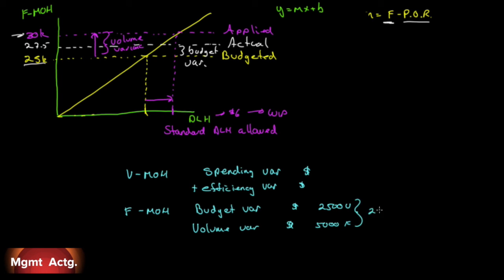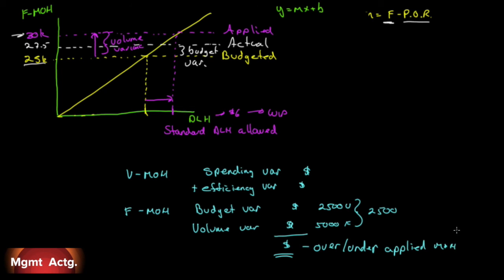From those figures, we said we over-applied $2,500. If you add up all these variance components — the spending variance and efficiency variance for variable overhead, and the budget variance and volume variance for fixed overhead — the total of all of them gives you the total over or under applied manufacturing overhead. The same netting concept applies to both the variable and fixed components.